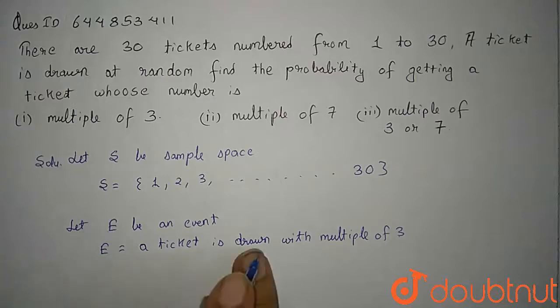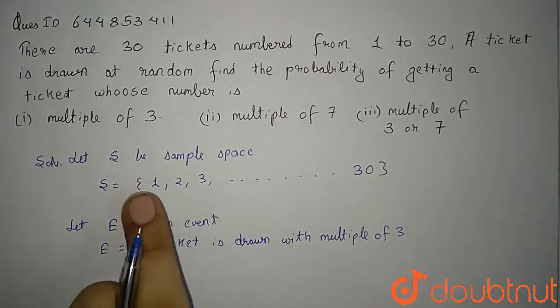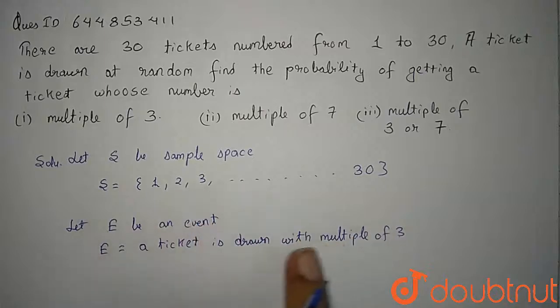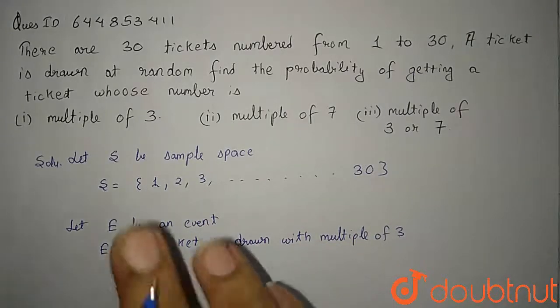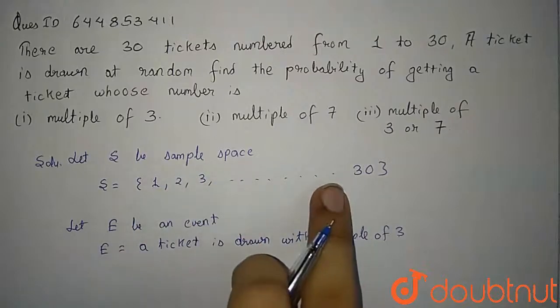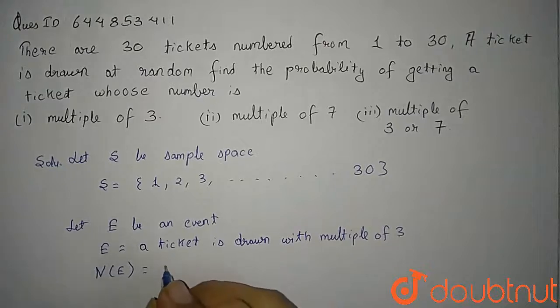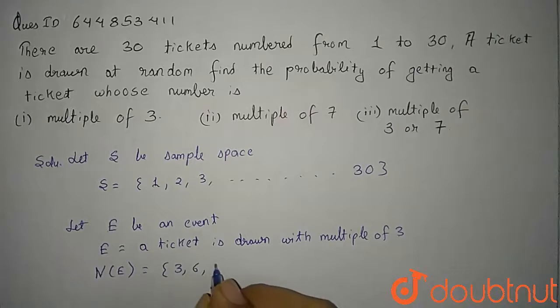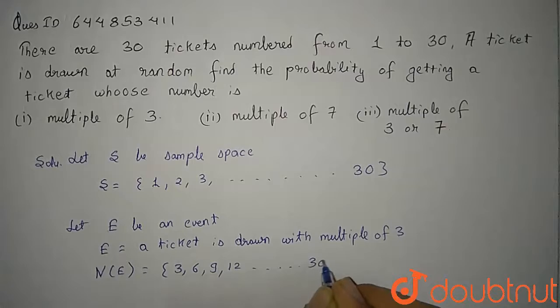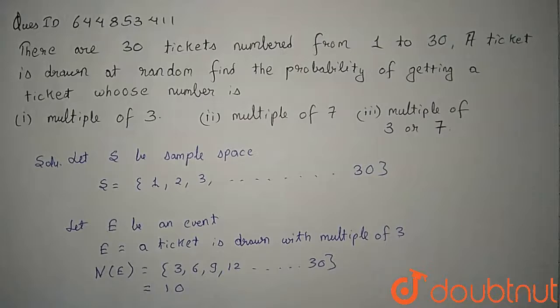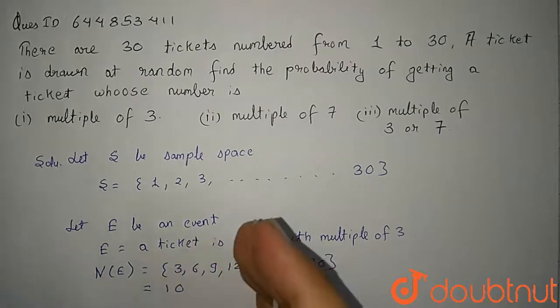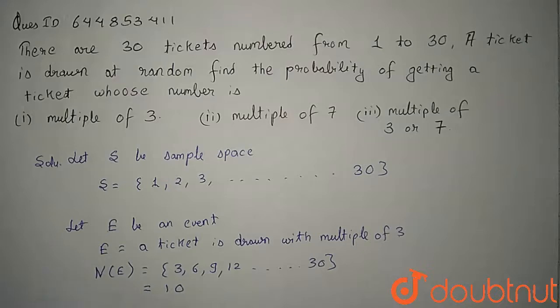Now what are the number of tickets at which there is a multiple of 3? From this set, what are the particular outcomes in which the ticket shows the multiple of 3? This will be the table of 3. For example: 3, 6, then 9, then 12, all the way up to 30. So how many are these? These are 10.